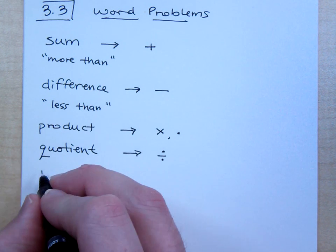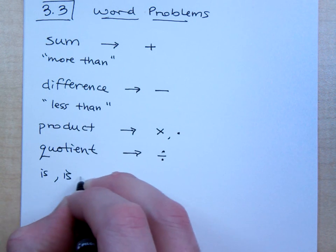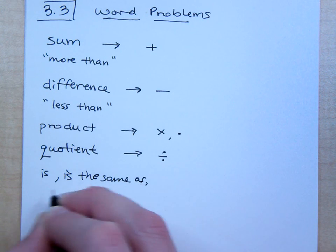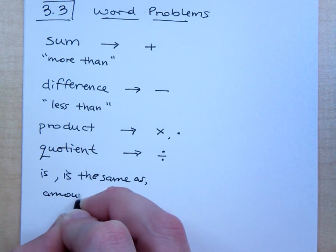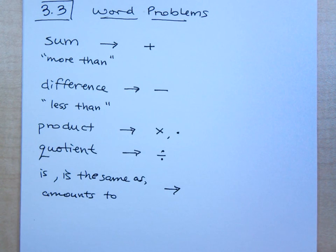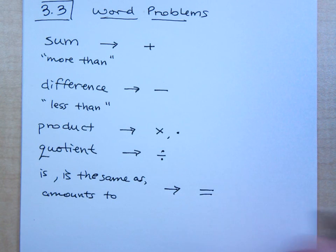And then we'll see things like this. Maybe is. Phrases say is the same as, or amounts to. How would you translate that? Equals, right? Because we'll have these sentences and we'll have to take the is, is the same as, and we'll have to convert that to an equal sign. We will be creating our own equations.